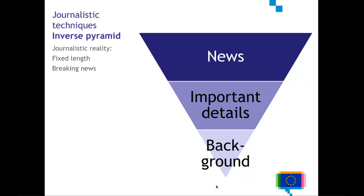What might happen in newsrooms is that suddenly there's breaking news and instead of a thousand words, the journalist is only assigned six hundred words. With the pyramid, this is really easy to handle — journalists cut from the bottom, leaving out the last part of the article, and the article will still stand because you're only leaving out details and background information. The news and the important details are still there. This is also related to another saying in journalism: when in doubt, leave things out. If you're not sure something should be in your article, that means it's not that important.